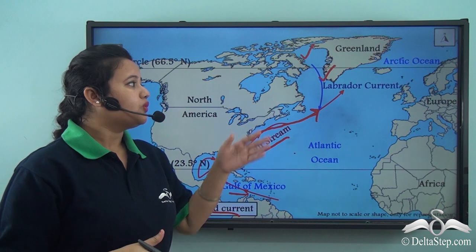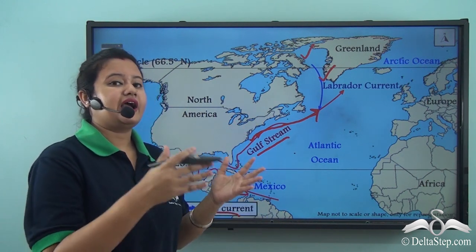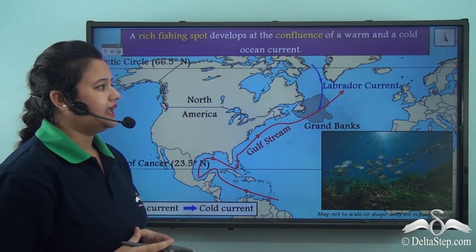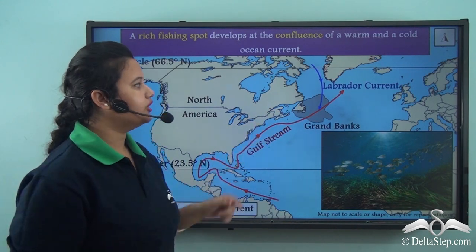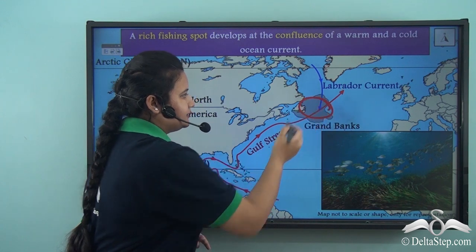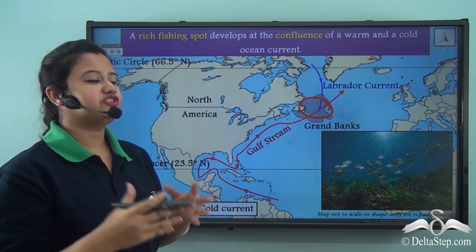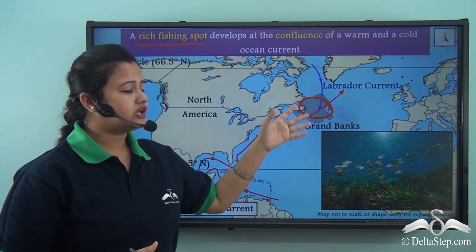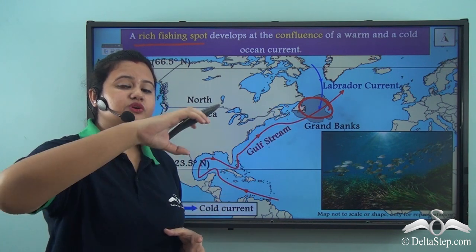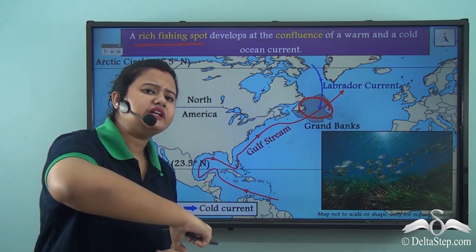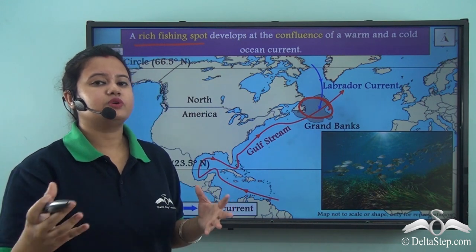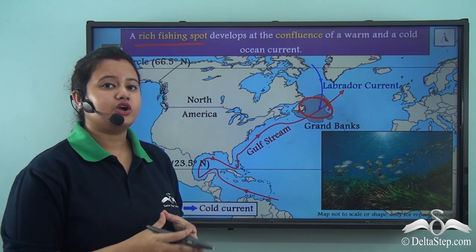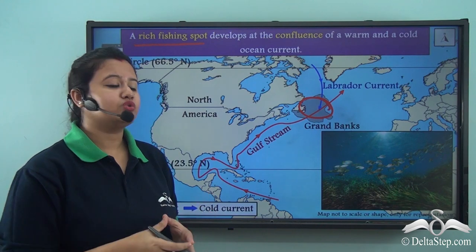Let us see what happens when a cold and a warm current meet. At the place where they meet, a rich fishing ground usually develops. This happens because the cold current brings rich nutrients and plankton from deep oceans, and as it connects with the warm current, the conditions favor the growth of fish, creating a rich fishing ground.